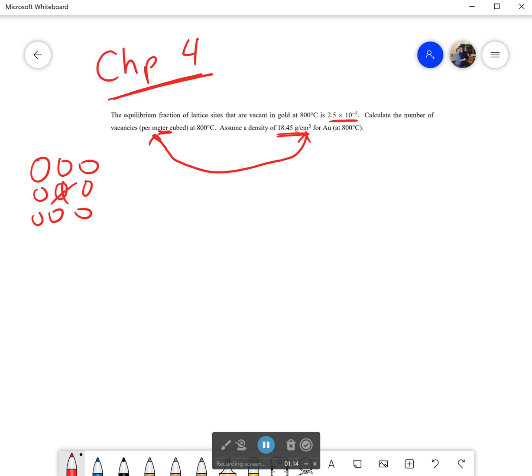So if we look at this, well we want the number of vacancies and we would first need to start with the density. Okay, so we have that density of gold and we know that's in grams per centimeter cubed. We want the vacancies but then we need the number of atoms per centimeter cubed. We need to convert. So we'll need to get from grams straight over to atoms per centimeter cubed.